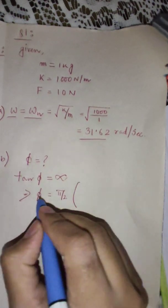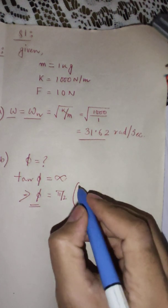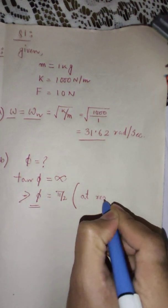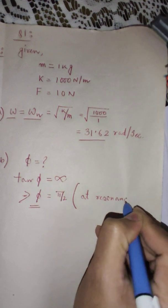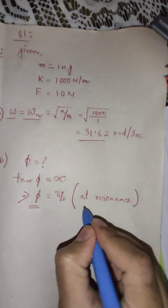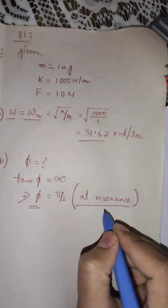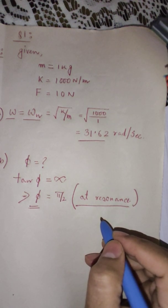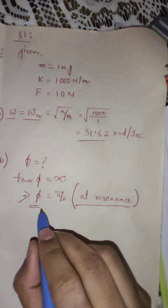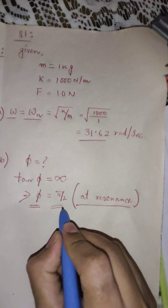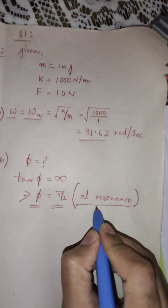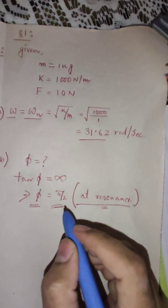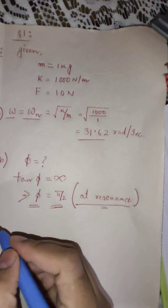So this phase angle is always 90 degrees at resonance. Remember this particular point for any future reference. If you are provided with a problem where you need the value of phase angle, always remember at resonance the phase angle is always 90 degrees. This is a theoretical standard proof.